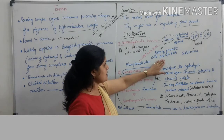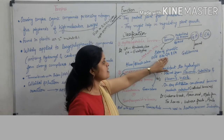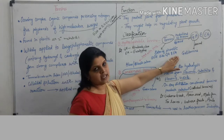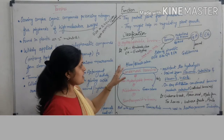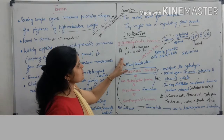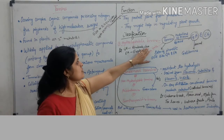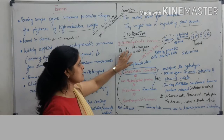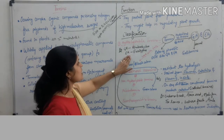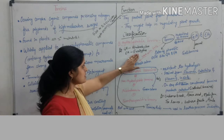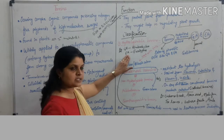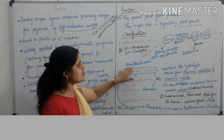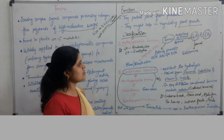Hydrolysable tannins are esters of phenolic acids like gallic acid and ellagic acid. They are mainly found in compounds containing gallic acid, and in eucalyptus, hydrolysable tannins are found in the form of ellagic acid. When tannins are treated with ferric chloride solution, they form a blue-black color.